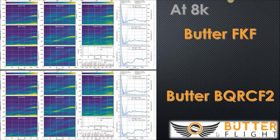Here's some of the information. At 8K, we're looking at the Butterflight FKF versus the Butterflight BQRC-F2. I threw that into PlasmaTree, which has a great filter and noise analyzer. I'll drop a link below to the PlasmaTree video I did — the noise analyzer was a new feature added in the last week or so.